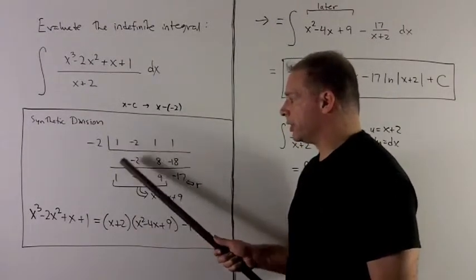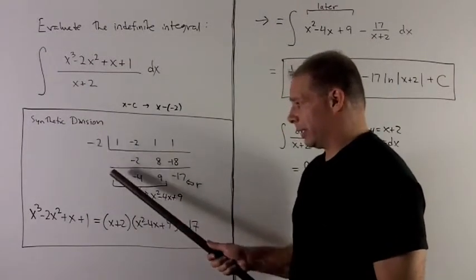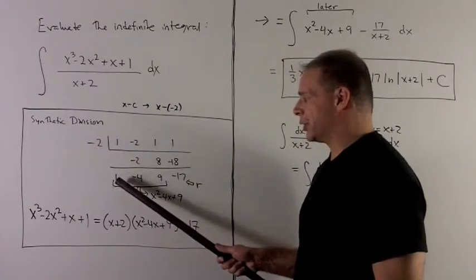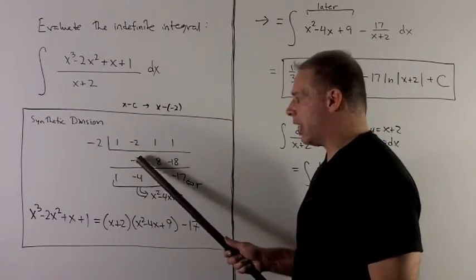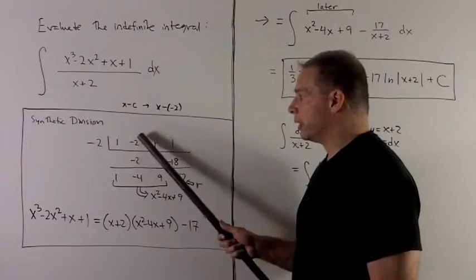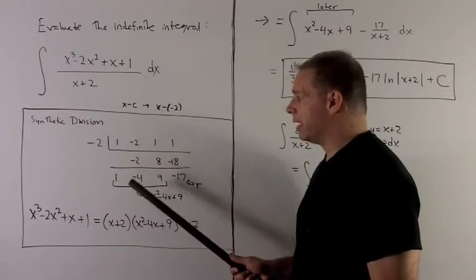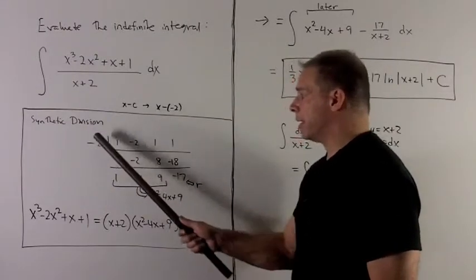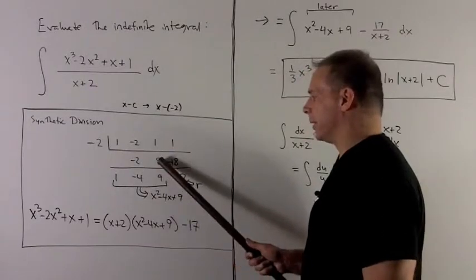The 1 here just drops, giving me a 1. I hit it with the minus 2 and put that number in the middle column, 1 over. We add this column. That gives me a minus 4. Minus 2 hits the minus 4, giving me an 8.